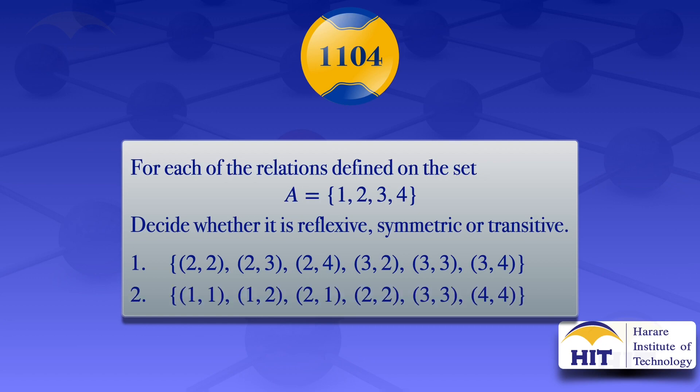The second relation contains the ordered pairs: (1,1), (1,2), (2,1), (2,2), (3,3), and (4,4).